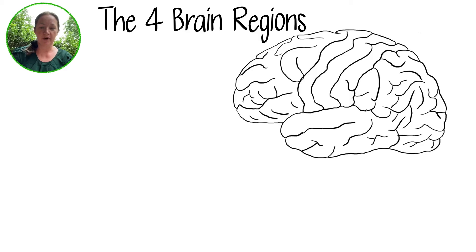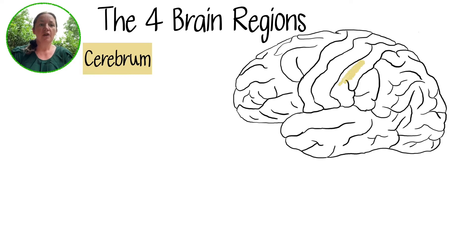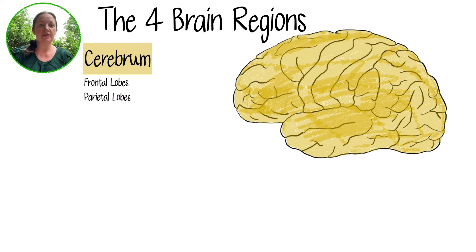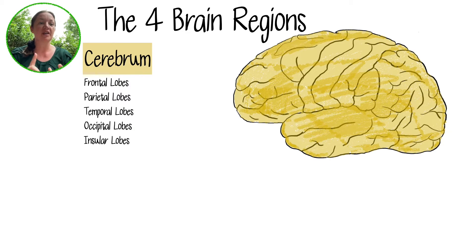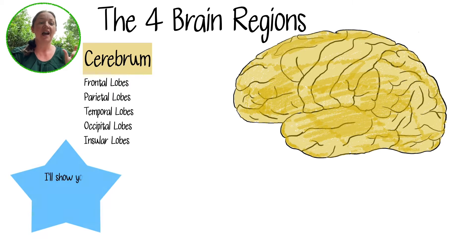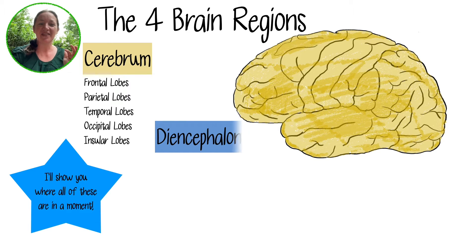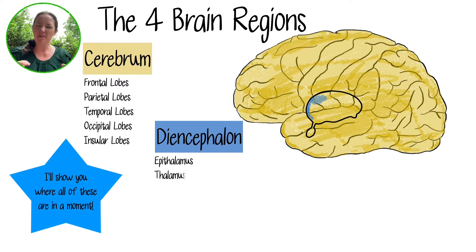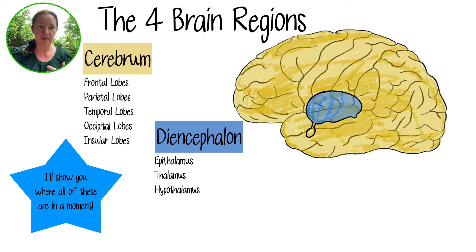Let's go over the four brain regions before we get into the lobes of the cerebrum. First, there's the cerebrum, which includes the frontal lobes, parietal lobes, temporal lobes, occipital lobes, and insular lobes. Then there's the diencephalon — it means through the middle of the head and it's deep in the heart of the brain — including the epithalamus, the thalamus, and the hypothalamus.